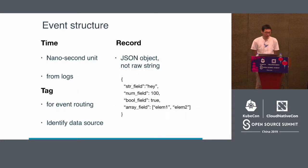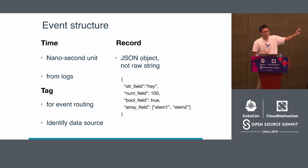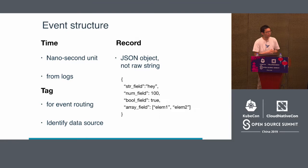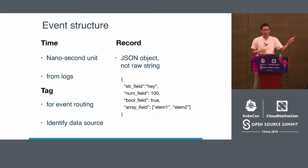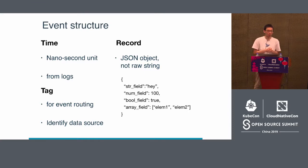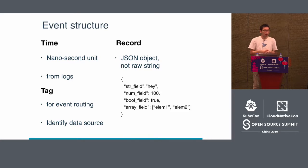This is Fluentd's event structure. For example, one Apache log line is converted into this data structure with a time, a tag, and a record. The tag identifies the data source and is used for event routing in Fluentd's pipeline. The important point is the record — it contains the actual log content, but in JSON object format, not a raw string. Many modern middleware and data services accept JSON natively, and JSON objects are easy to mutate or reformat. This is why Fluentd uses a JSON object rather than a raw string.